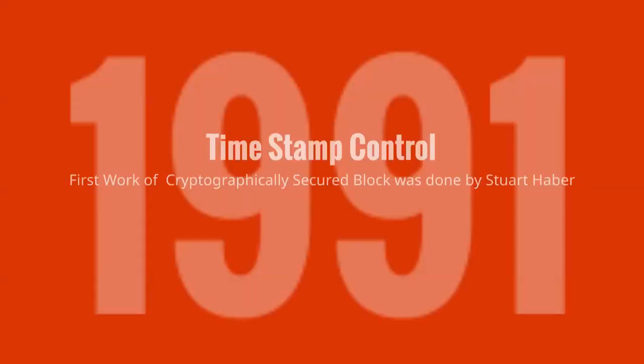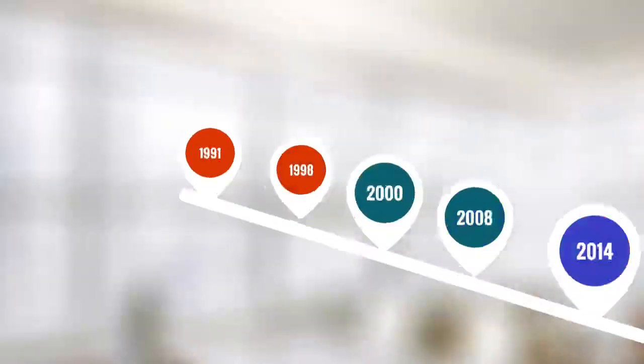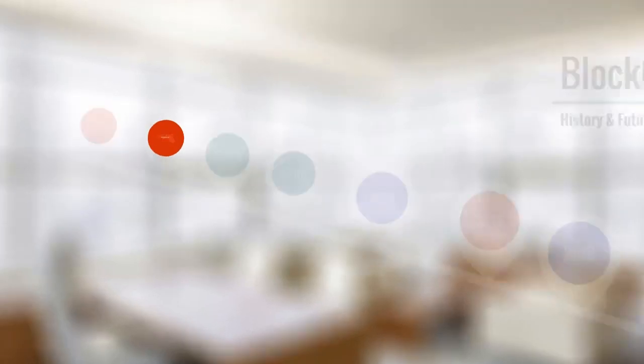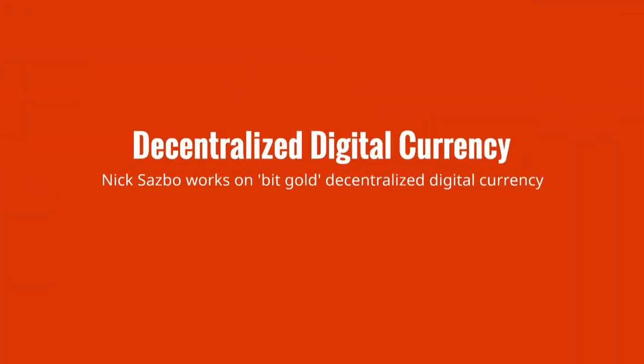Moving forward, in 1998 the first decentralized digital currency was introduced by the name of Bitgold. It was a decentralized digital currency made by Nick Szabo, a computer scientist. So both a decentralized digital currency and cryptographically secured blocks came long back in the 1990s.